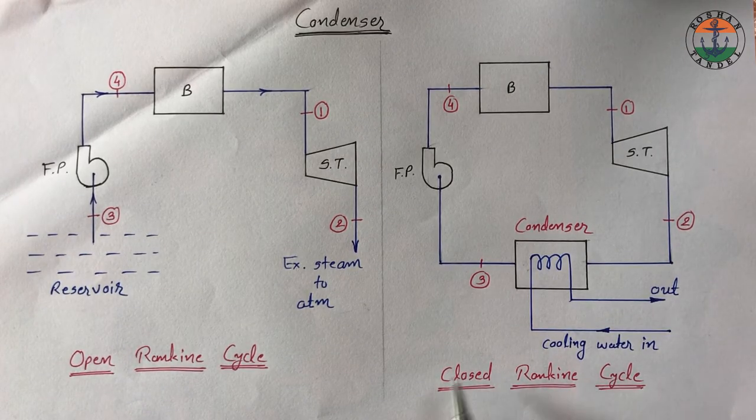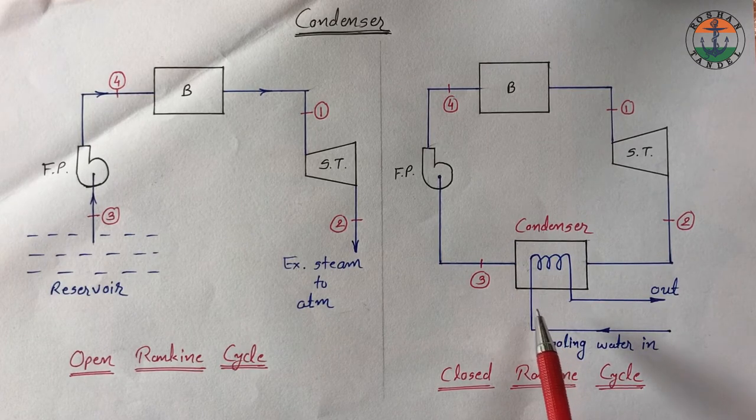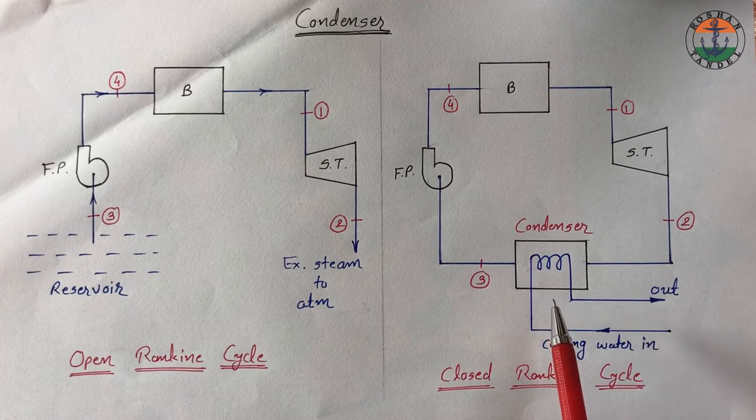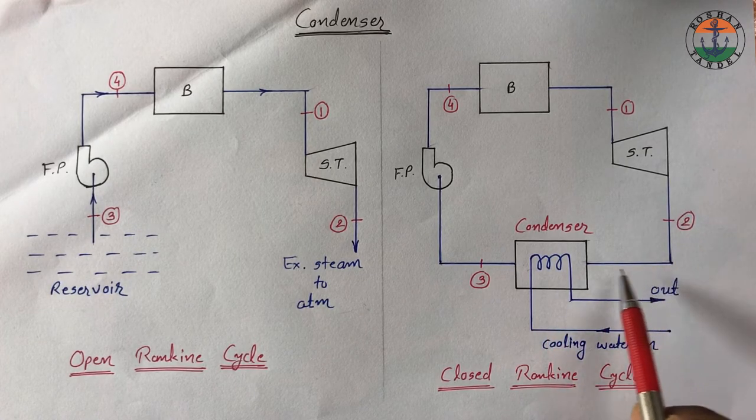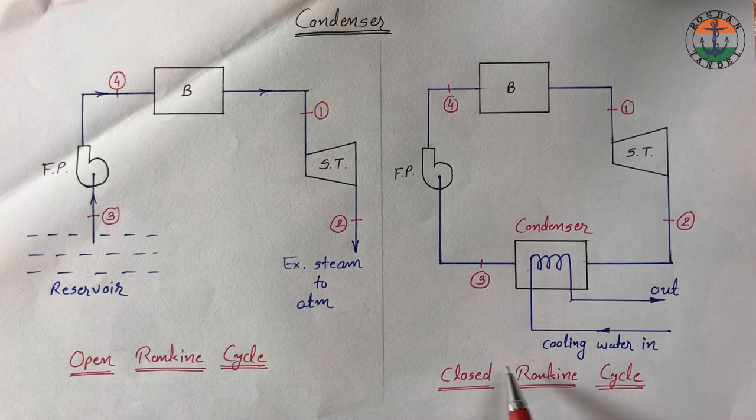Closed Rankine cycle with condenser is shown over here. Here condenser is a closed vessel or heat transfer device in which exhaust steam from the steam turbine is condensed by circulating cooling water.